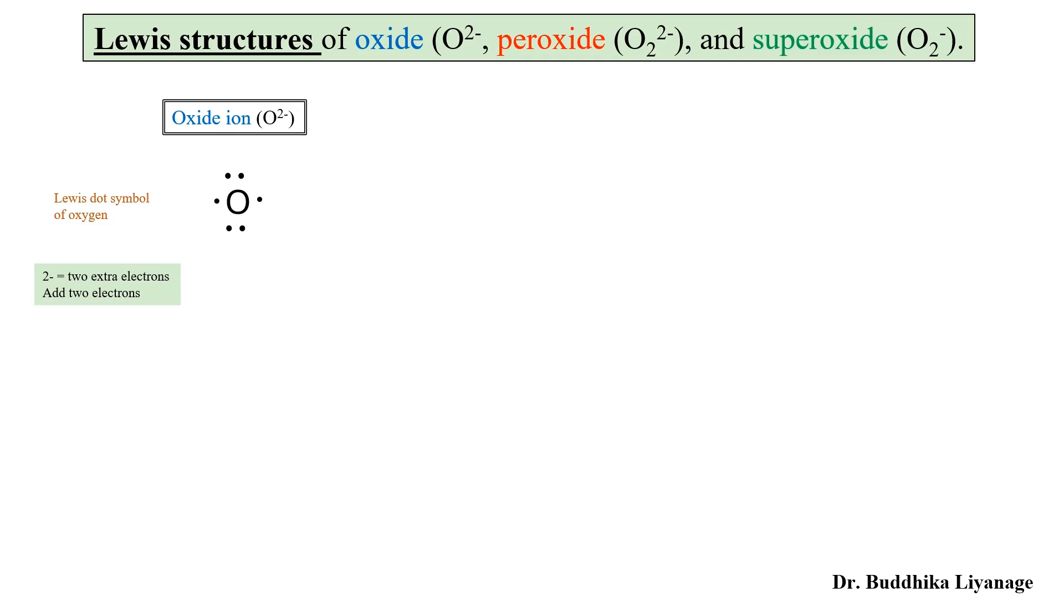So let's add two electrons. You can see those two electrons now in red color making two pairs on the oxygen, the total of four electron pairs on the oxygen with charge two minus. This charge indicates how many electrons we added extra onto the neutral oxygen.